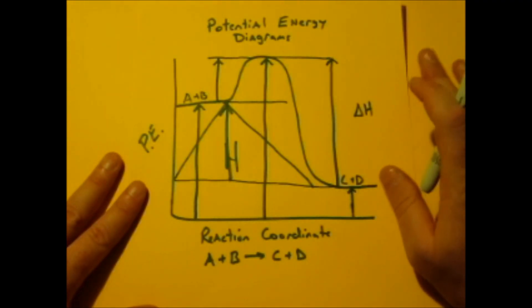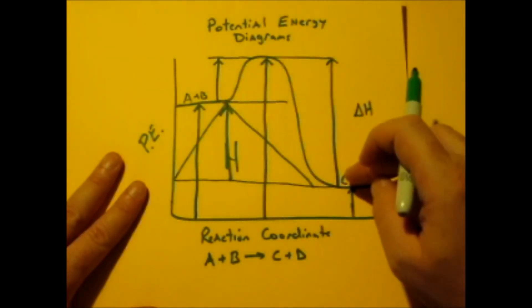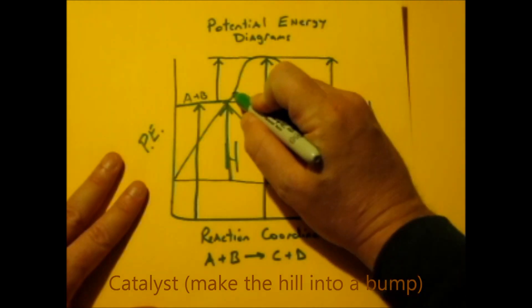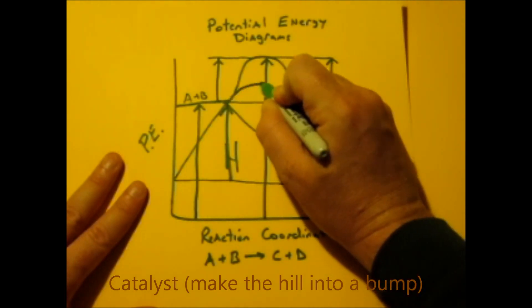Now, there is one other thing they're going to ask you, and that is what a catalyst does. Well, a catalyst speeds up the reaction without changing the products or the reactants. So it gets you from the reactants to products quicker. So what it does is it actually lowers the activation energy.